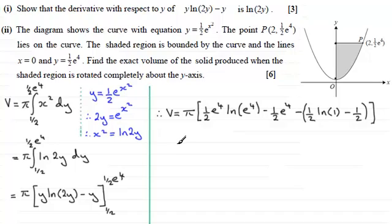Alright. And if we simplify this we'll keep that pi out there. And what have we got here? Well for this term here the natural log of e to the power 4 I'm going to use the power rule for logs and that'd be 4 times the natural log of e. So we've got half e to the power 4 multiplied by 4 times the natural log of e. And we'll just put that term in minus a half e to the power 4.